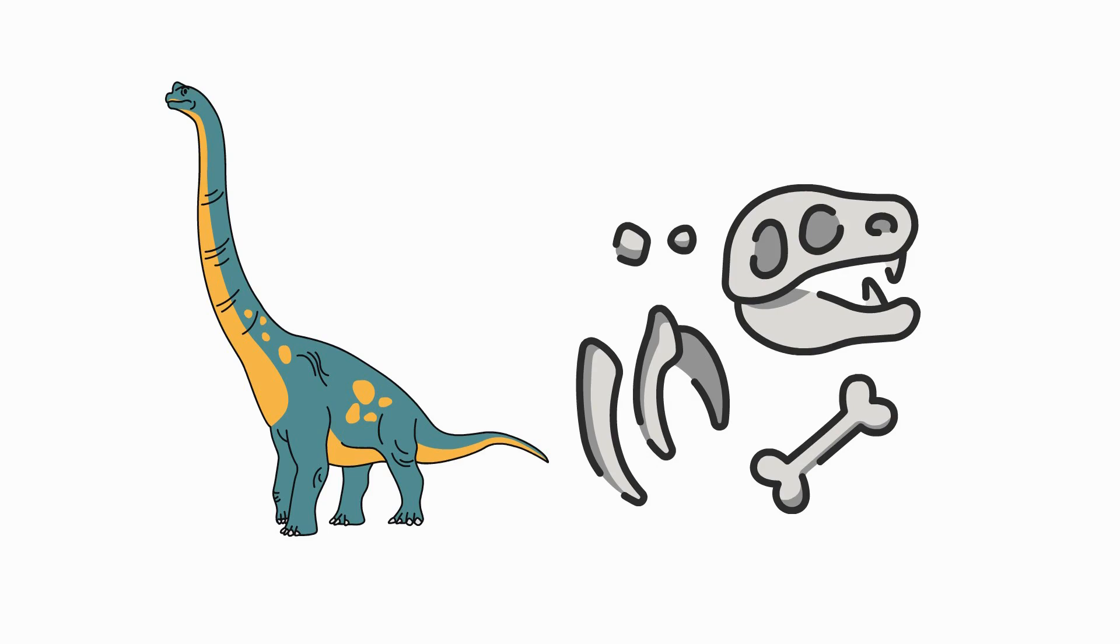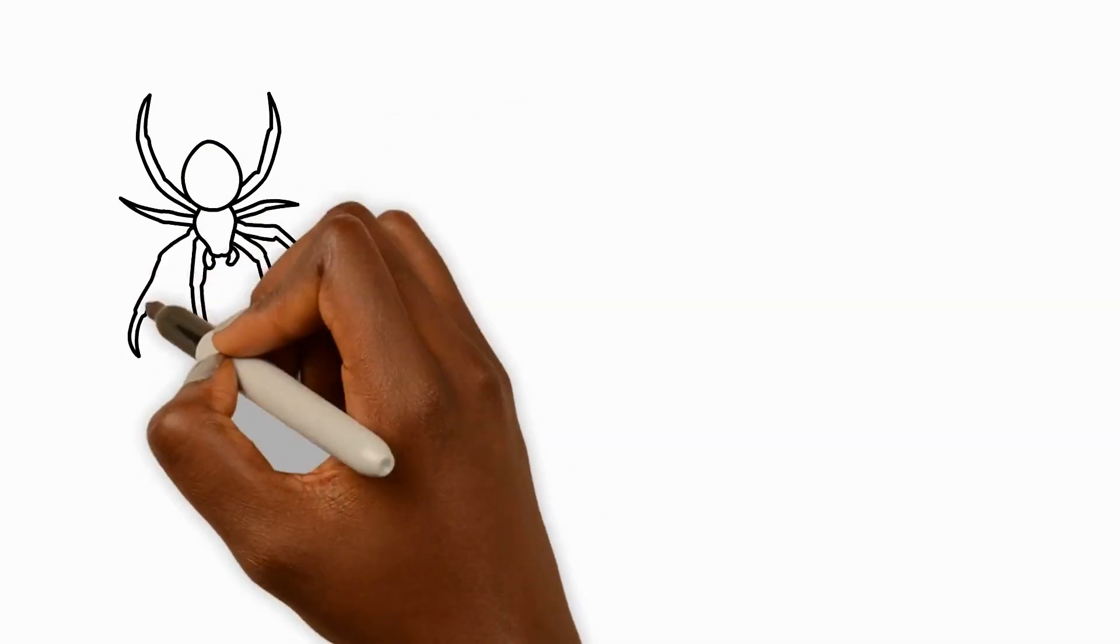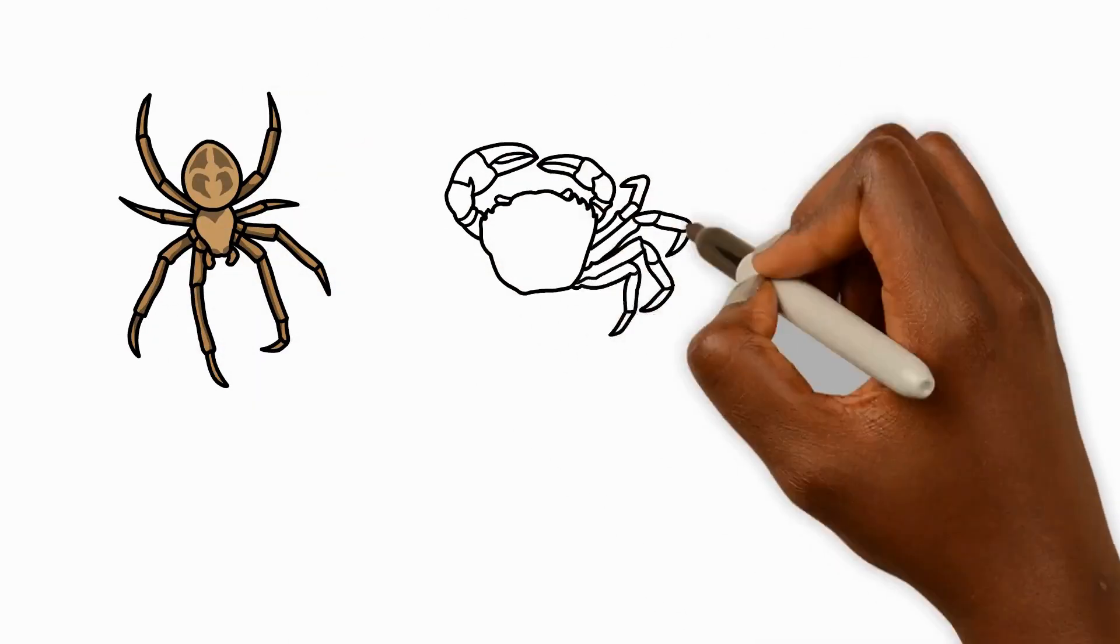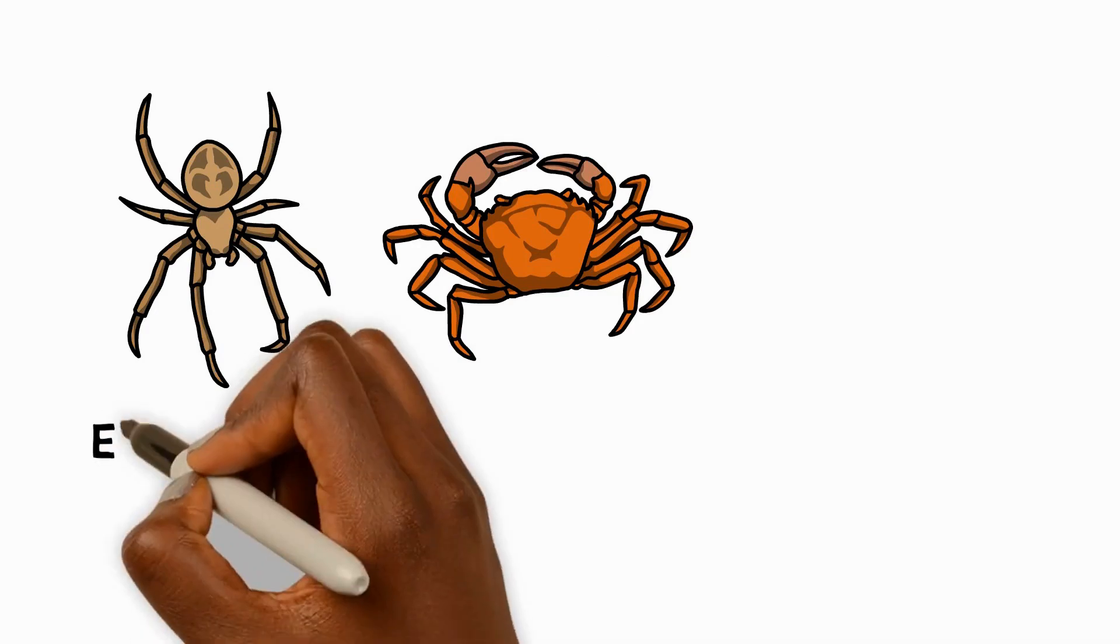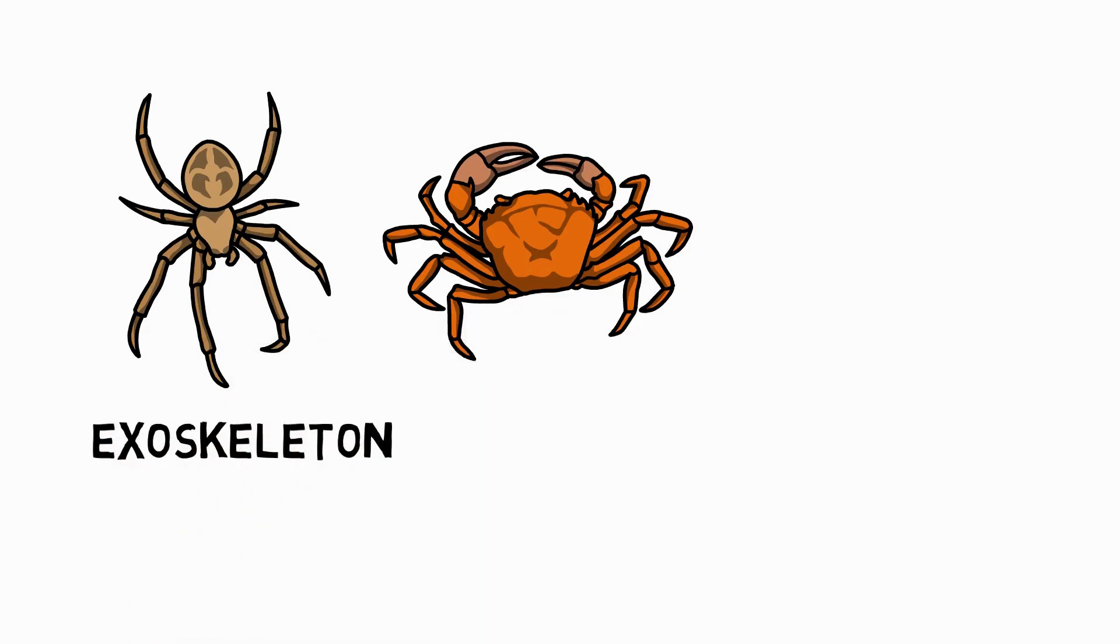But what about animals without bones? It may surprise you to know that most animals are actually boneless. They might have a hard outer casing covering their body, like spiders and crabs, and we call this casing an exoskeleton.